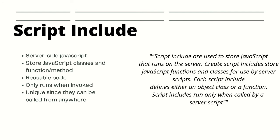According to the ServiceNow docs, Script Includes are used to store JavaScript that runs on the server side. You create a Script Include to store JavaScript functions and classes for use by server scripts. A Script Include defines either an object or a class, and it only runs when called from a server-side script. You can think of a Script Include as a reusable snippet of code that you reference or invoke from another place in the system.